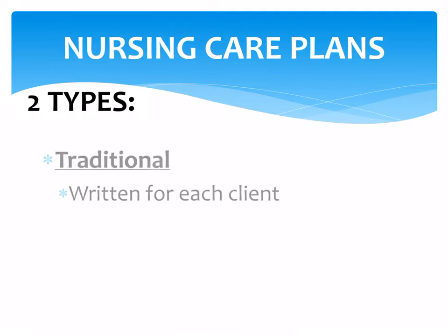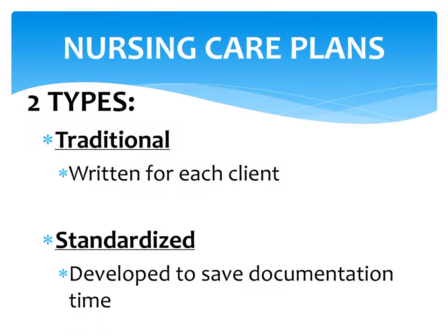Nursing care plans are divided into two types: traditional — written for each individual client — and standardized — developed to save documentation time with pre-prepared care plans for particular cases. For example, there are pre-prepared nursing care plans for pneumonia. Traditional is individualized; standardized uses a pre-formed plan.